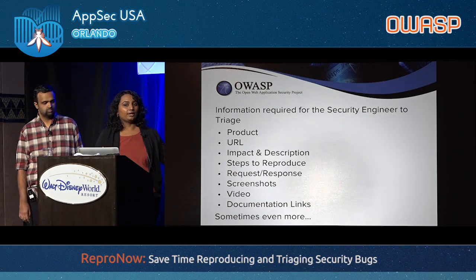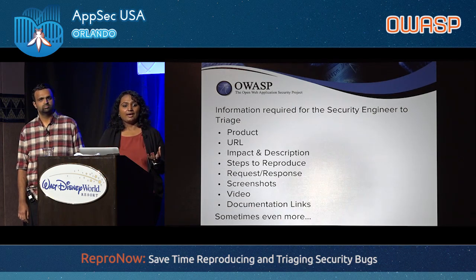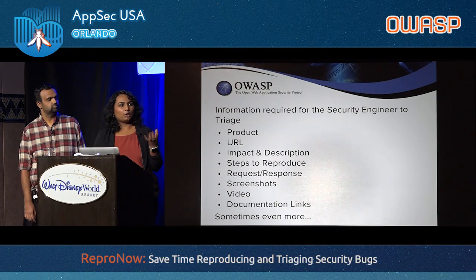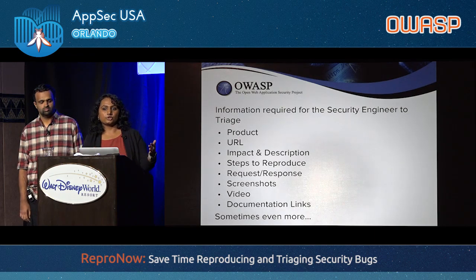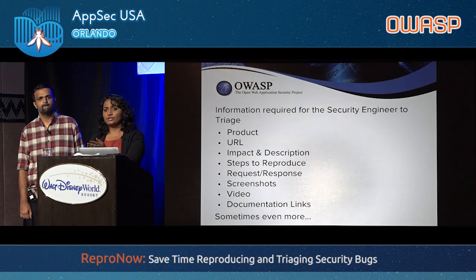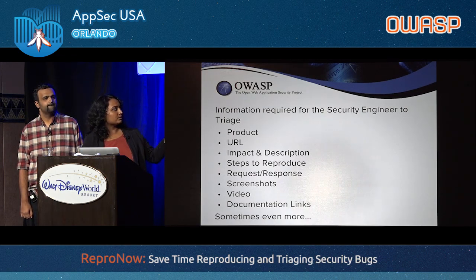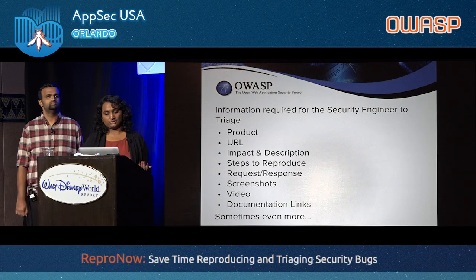What information does a security engineer actually need to triage a bug? You need to know what product the bug is on, the URL for web applications, the impact description — what the researcher is trying to demonstrate — and of course the steps to reproduce. For the steps to reproduce, you need HTTP requests like POST or GET, screenshots, the flow, and pre-existing conditions. This is not an exhaustive list, but you typically require way more information most of the time.